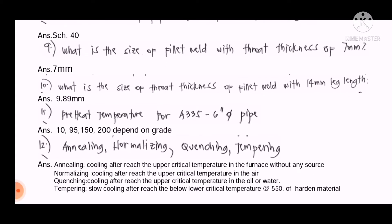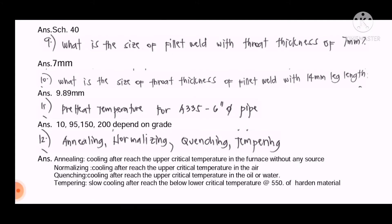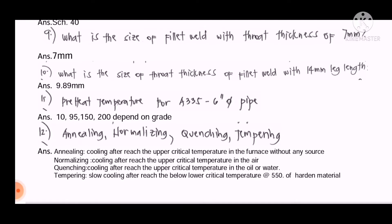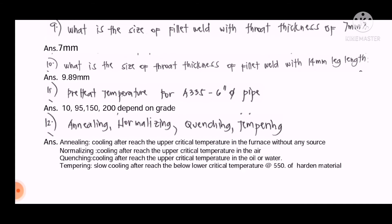Question number eleven: What is the preheat temperature for an A335 six-inch diameter pipe? A335 refers to alloy material. The preheat temperature depends on the pipe grade. For example, A335 P11 has a preheat temperature of 149 degrees centigrade, and A335 P22 has a preheat temperature of 150 degrees centigrade. The temperature depends on the pipe grade — values can range from 10, 95, 150, to 200 degrees centigrade. This is how you should explain it.